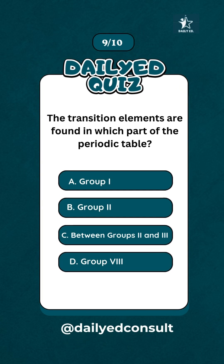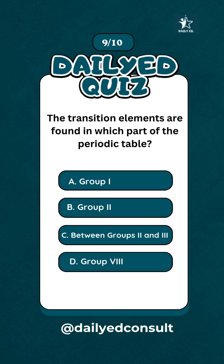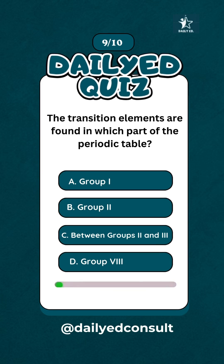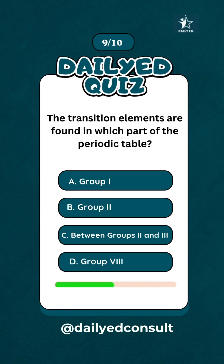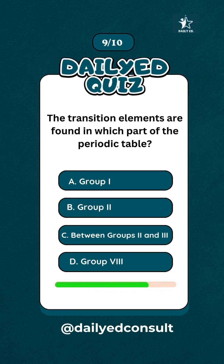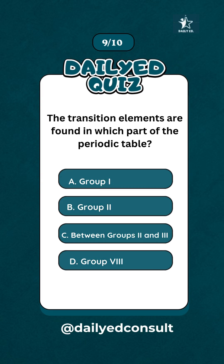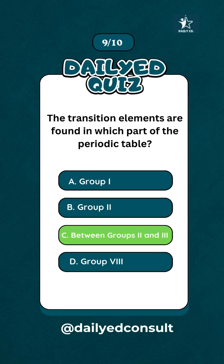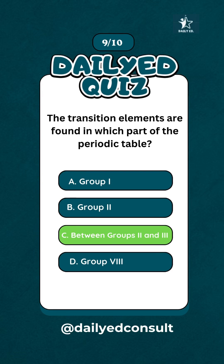The transition elements are found in which part of the periodic table? Between groups 2 and 3.